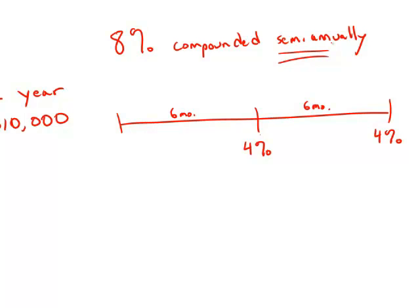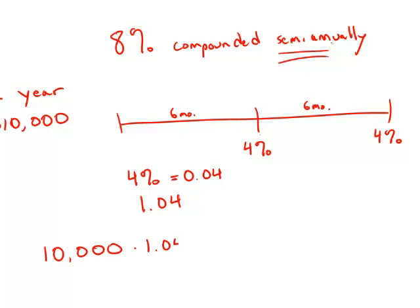We have to think about percents as multipliers. Four percent as a decimal is 0.04, and the way we find a multiplier for a percentage is to add one. So 1.04 is the multiplier. If I start out with $10,000 and multiply by 1.04, this gives me $10,400.